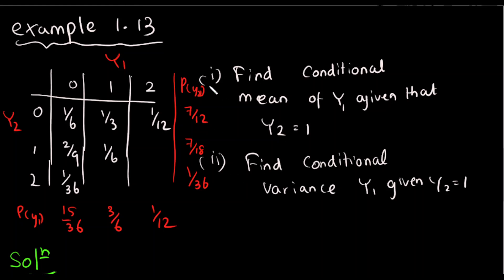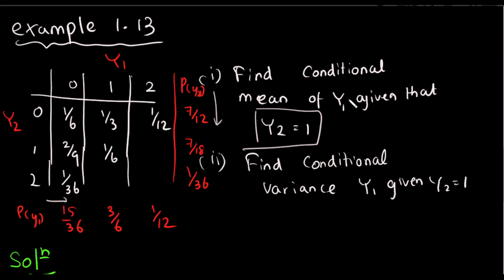As an example, we have a table showing marginal probability distributions. We will see discrete random variables. We will see marginal probability distributions row-wise and column-wise. We will find the conditional mean of y1 given that y2 is equal to 1, and the conditional variance of y1 given that y2 is equal to 1.